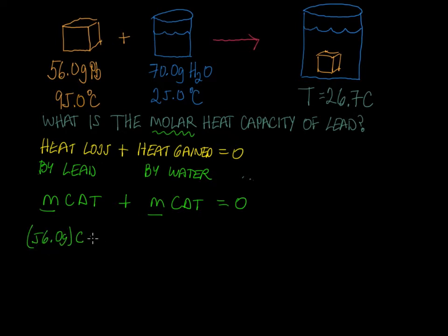C is unknown — that's what we're trying to find, the heat capacity. The change in temperature is always going to be final temperature minus initial temperature.